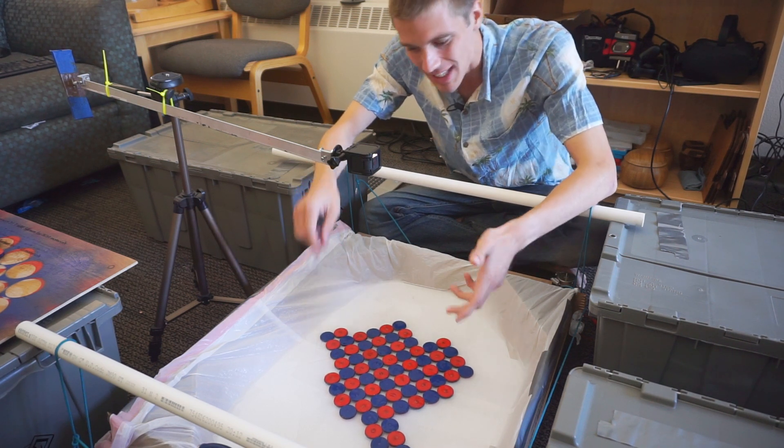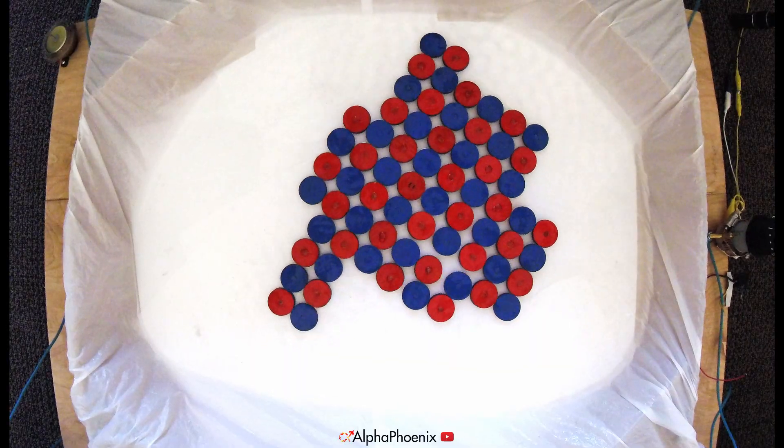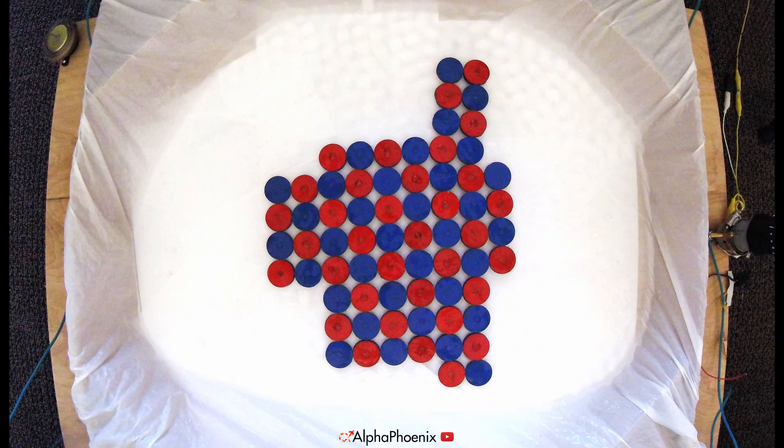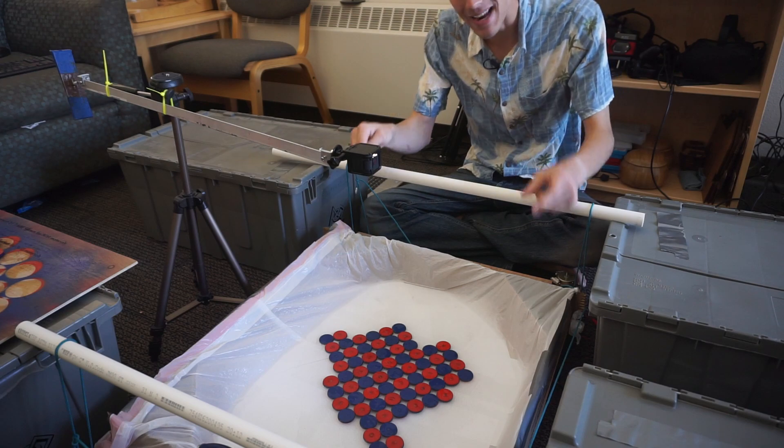Why? Why would they choose to organize themselves in this particular way? There was nothing about the setup that said red and blue discs must stick together at 90 degree angles. All the discs were round, but for some reason they all worked together to make this pattern.